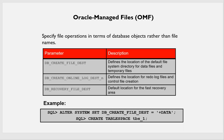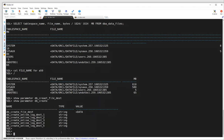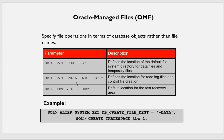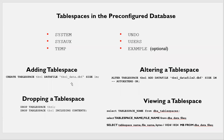It is as simple as: ALTER SYSTEM SET DB_CREATE_FILE_DEST. You can set that parameter and then when you create a tablespace, you don't need to provide any path. If you observe here, you are giving this particular data file name and it is going inside the U01 path.